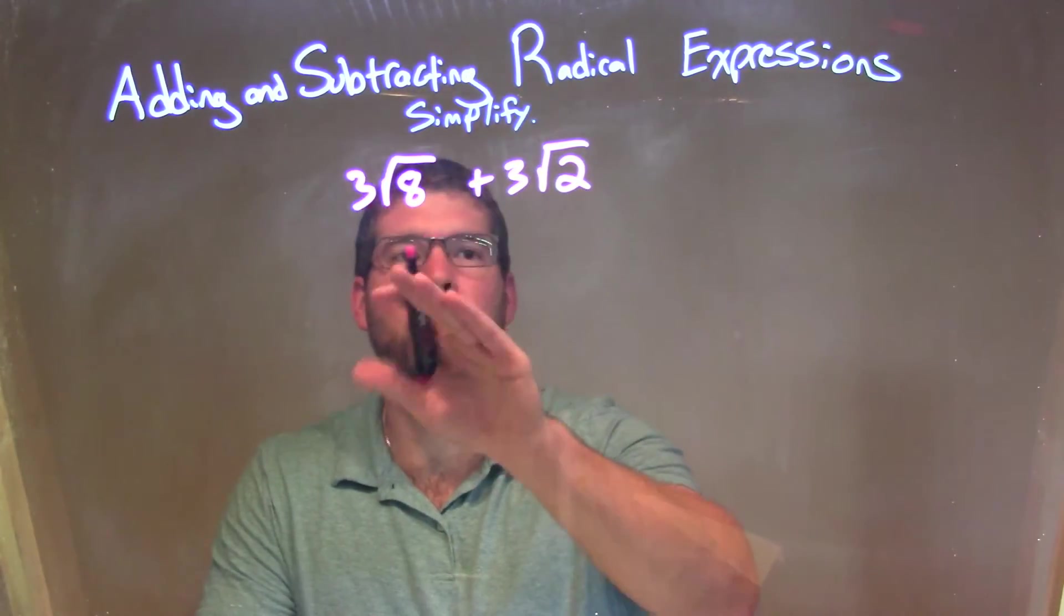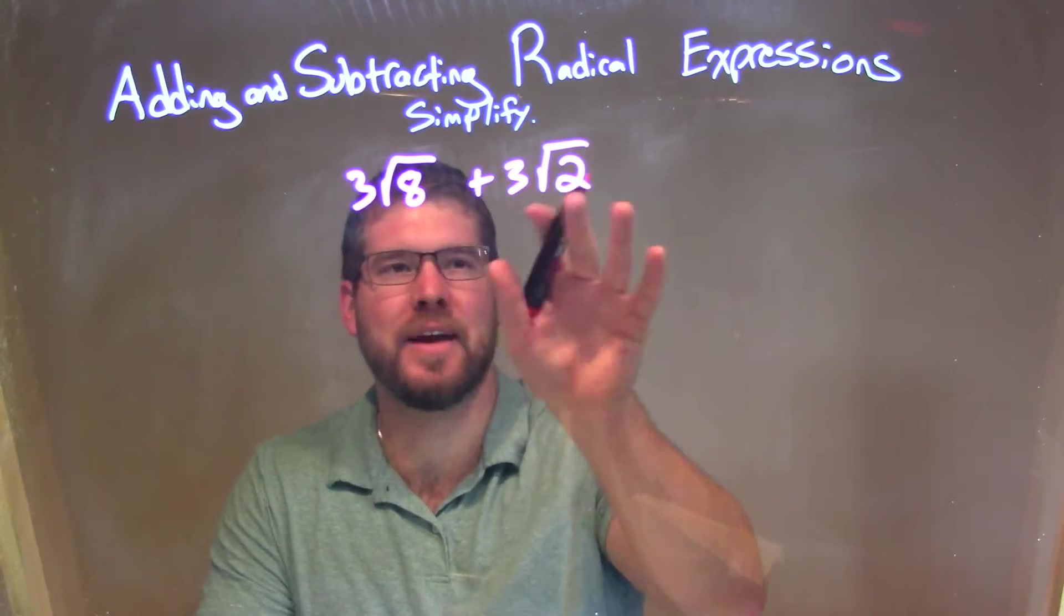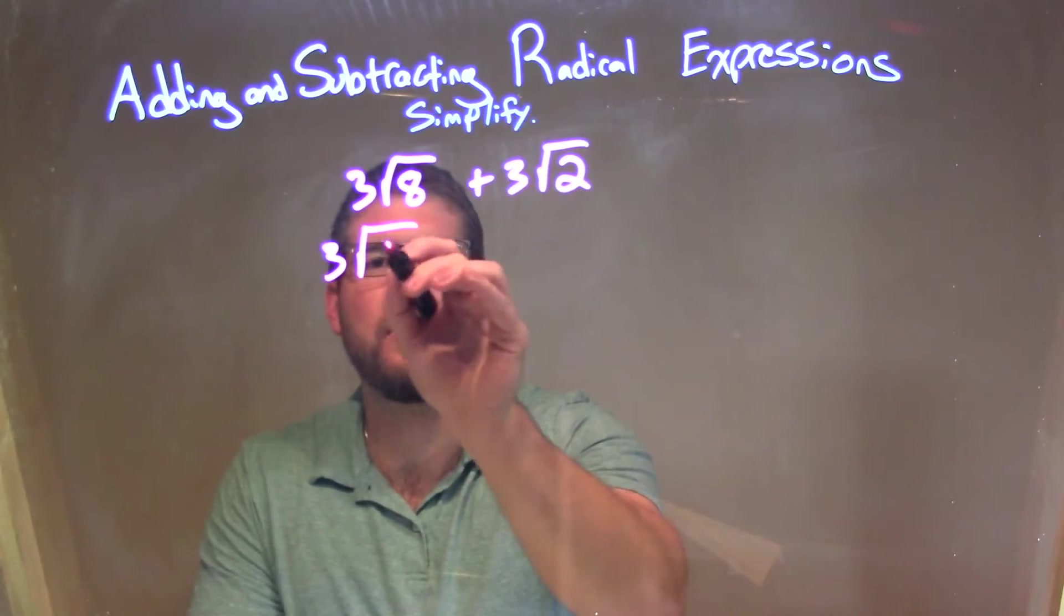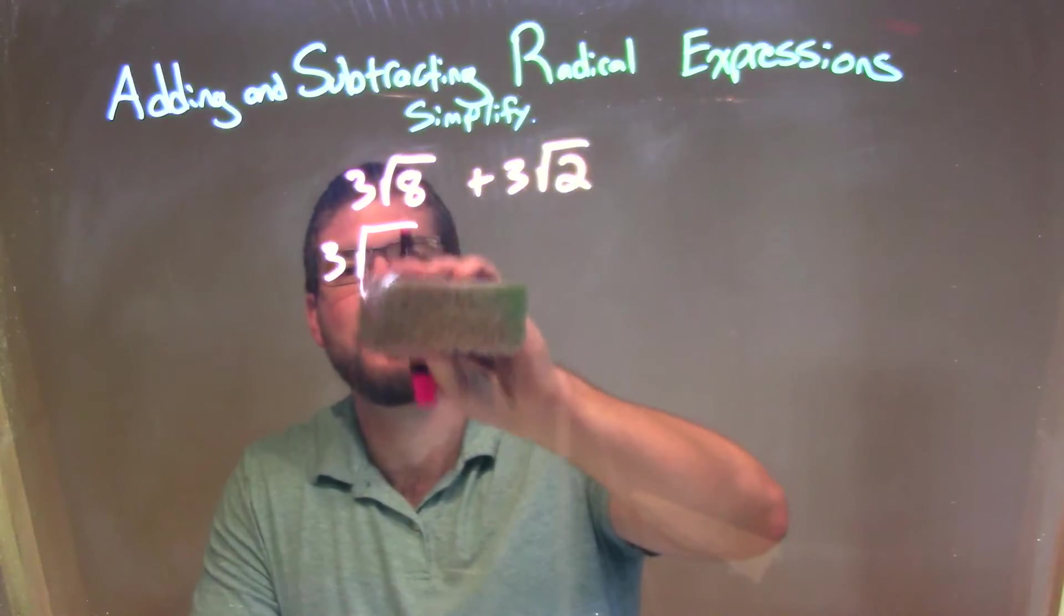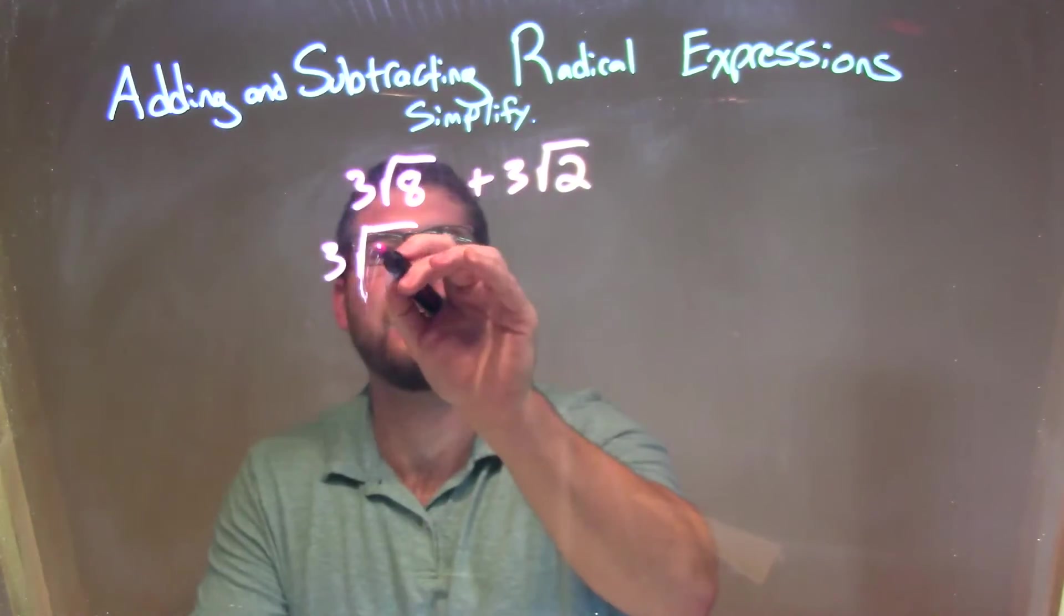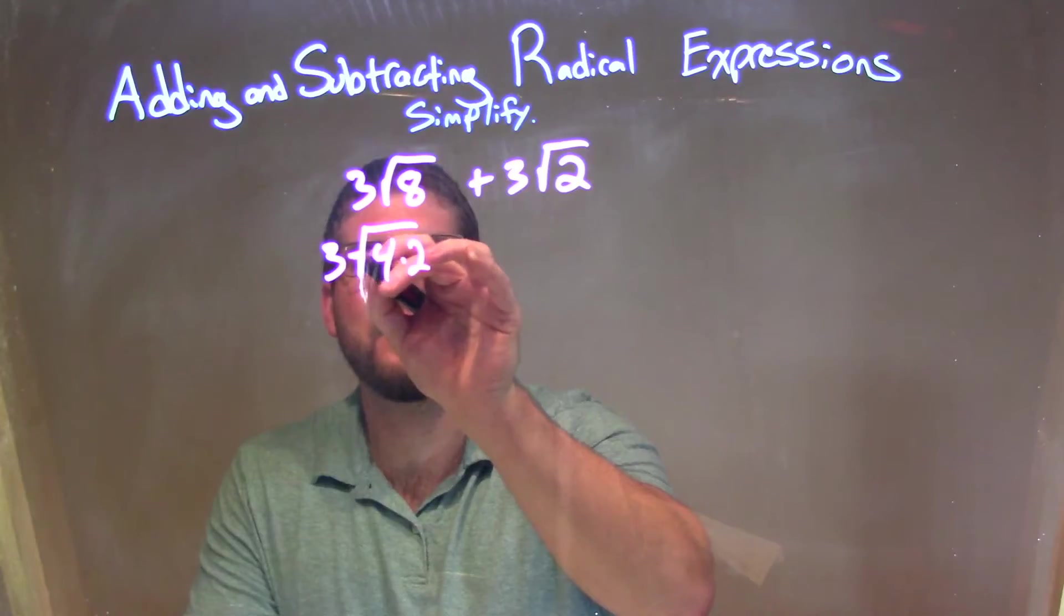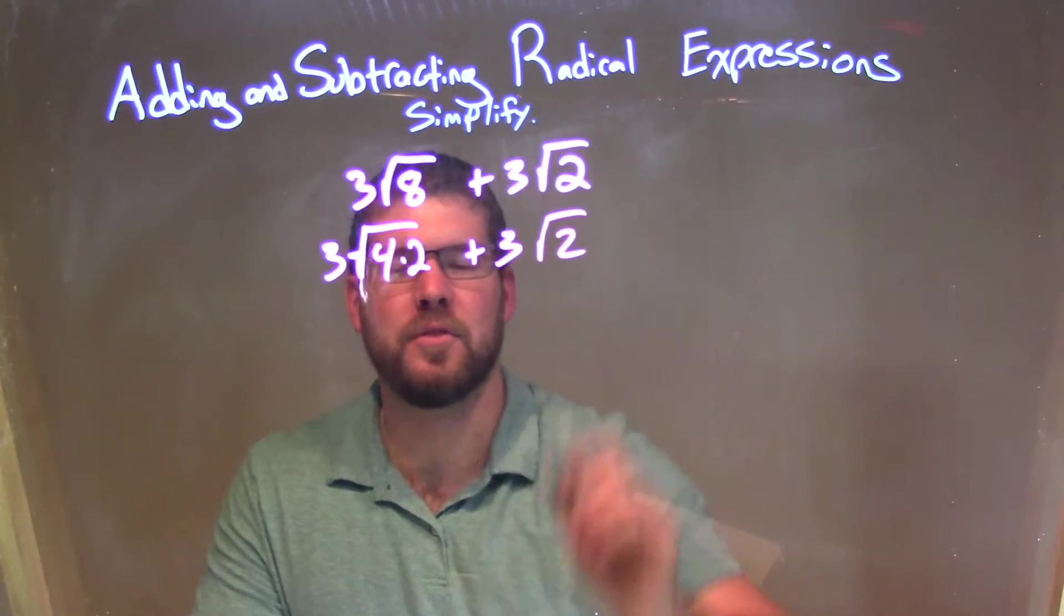So 8 I can break down to be 4 times 2. That's kind of the goal, see if I can get 2 in there. So 3 square root of 8 - 8 becomes 4 times 2. I'm just rewriting the problem there, square root of 4 times 2, plus 3 times the square root of 2.